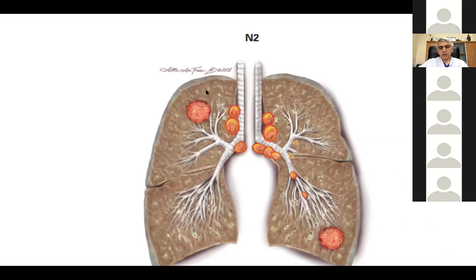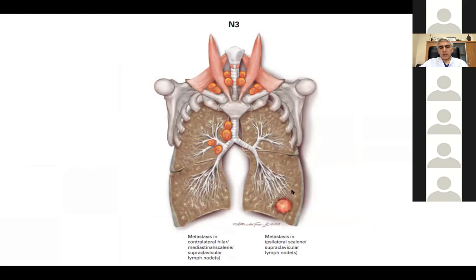N2 lymph node means there is a left lower lobe tumor with subcarinal and ipsilateral paratracheal positive lymph nodes. If there is mediastinal lymph node positivity, it is called N2. For N3: there is a left lower lobe tumor but with contralateral positive hilar or paratracheal lymph nodes — this patient has N3 disease. Remember that N2 and N3 patients are not amenable for surgery. If there is a supraclavicular or scalene lymph node positive, even if ipsilateral, the patient should be staged as N3.